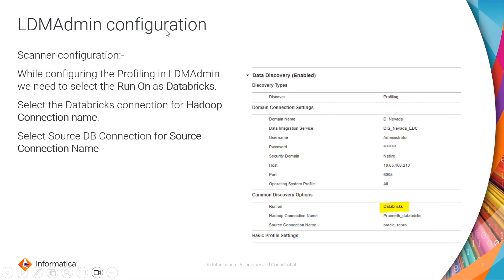On the LDM admin side, where we generally configure profiling to run on native, because we will be running profiling on Databricks, we have to select Databricks and the Hadoop connection created in the admin console, along with the actual source connection where your metadata resides. The source connection is where the actual metadata and data is stored, and this is the connection used to run the profiling on the Databricks Spark engine.